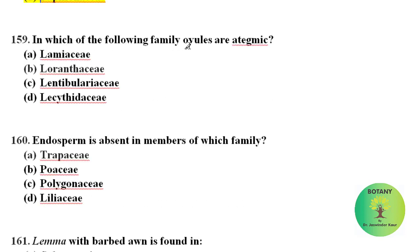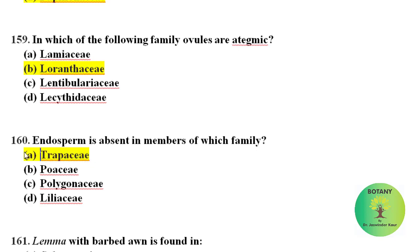In which of the following families are ovules ategmic? The ovules that lack integuments are known as ategmic ovules, and these are present in family Loranthaceae. Endosperm is absent in members of family Trapaceae.